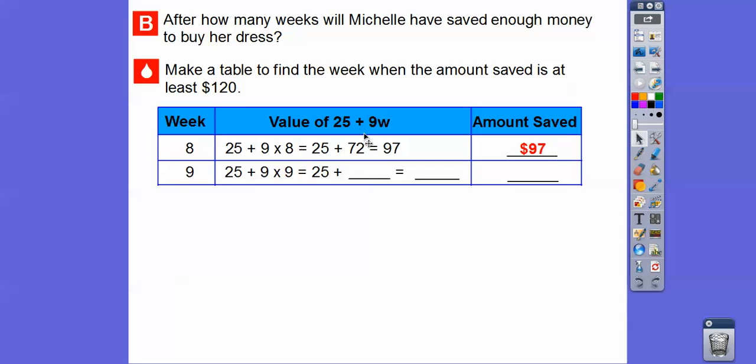So after 9 weeks we're going to go ahead and plug in. Remember the expression is 25 plus 9w. So after w equals 9 it's going to be 25 plus 9 times w, which is 9 times 9. So we're going to go ahead and multiply 9 times 9 and that's going to give us 81. So 25 plus 81 is 106. So that's not enough.